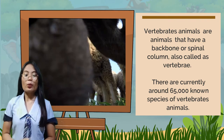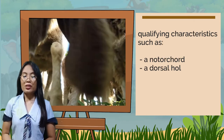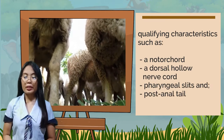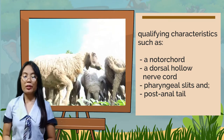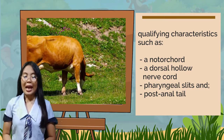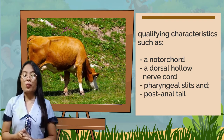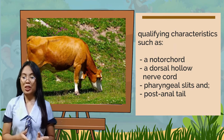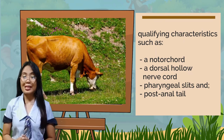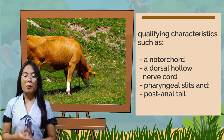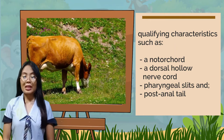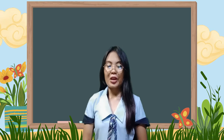All of them have a similar anatomy and morphology with the same qualifying characteristics, such as a notochord, a dorsal hollow nerve cord, pharyngeal slits, and a post-anal tail. Vertebrates range in size from the frog species as small as 7.7 mm to the blue whale as large as 33 meters. Vertebrates are the only chordates that have a brain as part of their central nervous system.